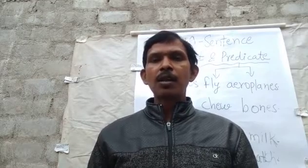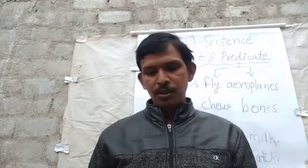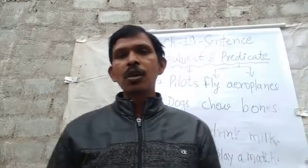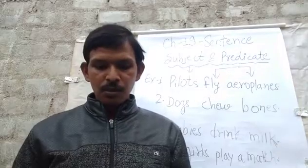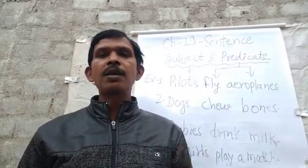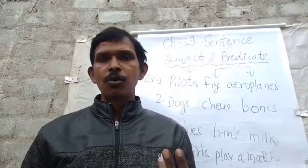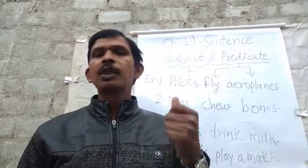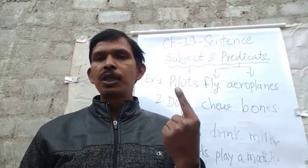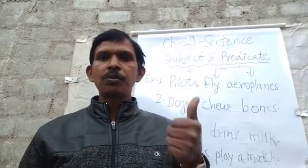A sentence is made of several parts or several words. A group of words that makes a complete sense is called a sentence. A sentence has mainly three parts: first is subject, second is object, third is verb.